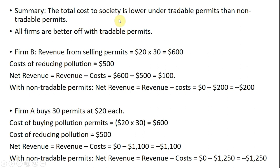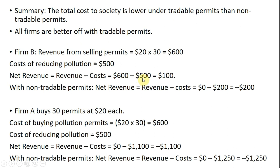The total cost to society is lower under tradable permits than non-tradable permits. From Firm B's perspective, it gets revenues from selling permits — it sells 30 permits at $20 apiece, so Firm B gets $600 of revenue. It has to reduce pollution at a cost of $500. So the net revenue for Firm B is up by $100.